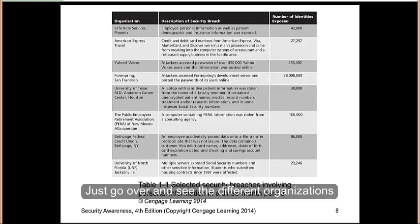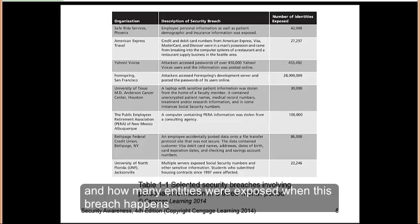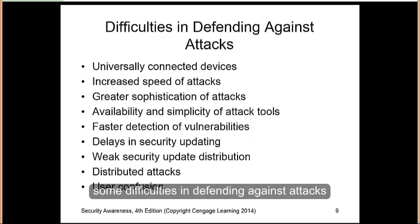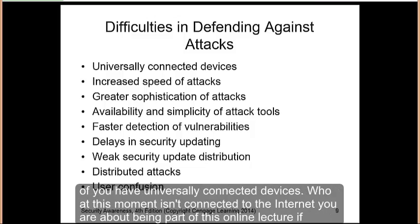In your book, Table 1-1 shows the different organizations, the types of security breaches that occurred, and how many entities were exposed when each breach happened. Some of the difficulties in defending against attacks begin with universally connected devices.